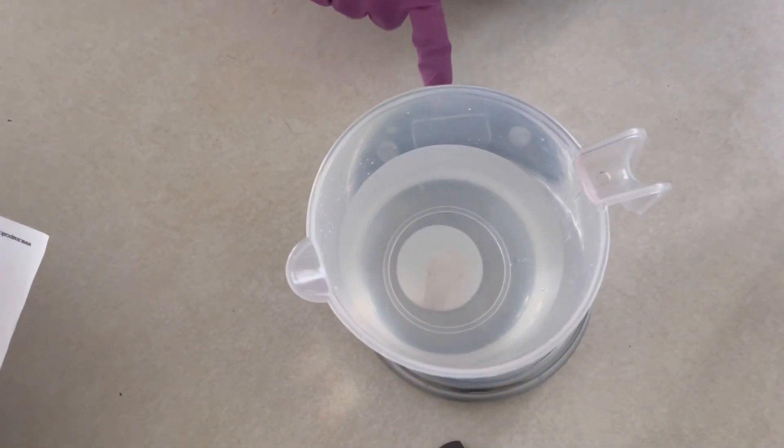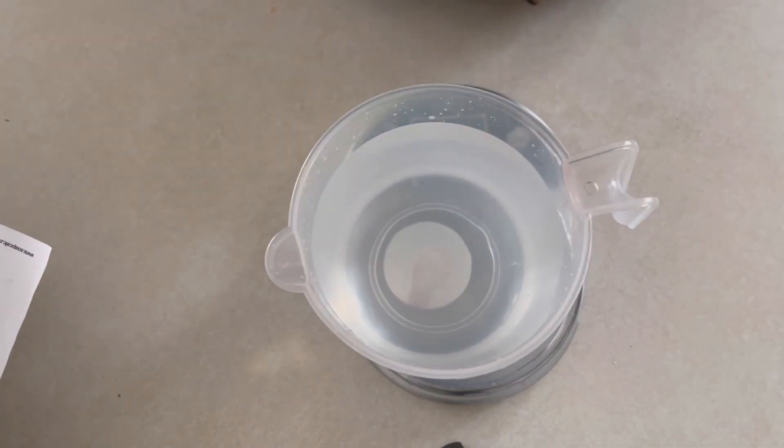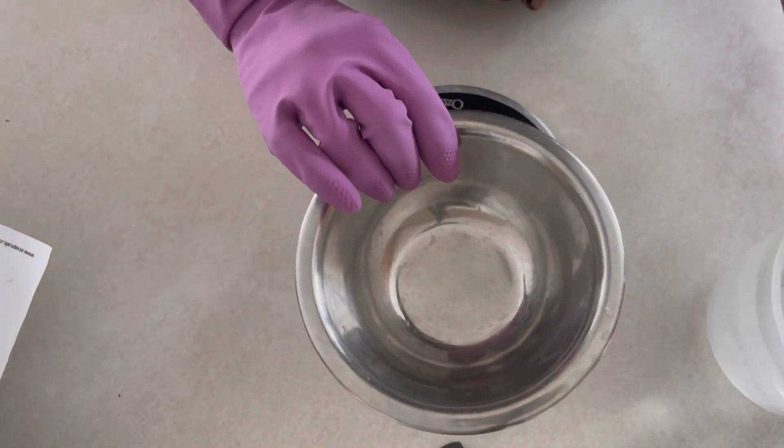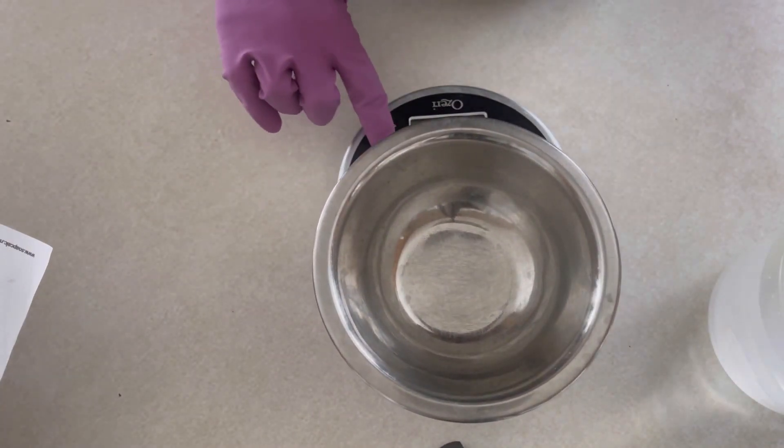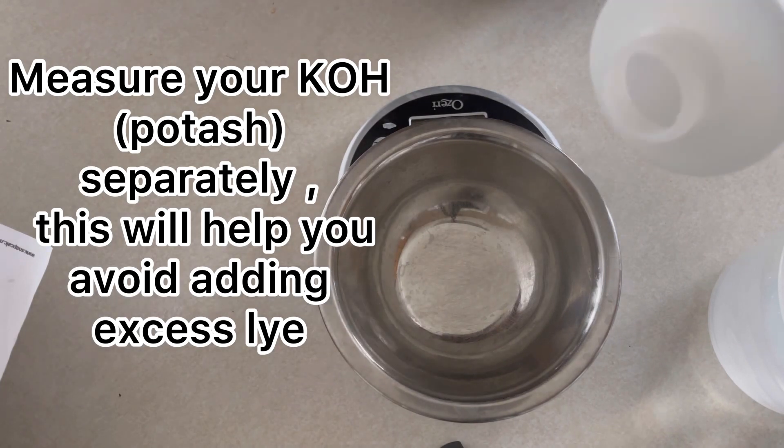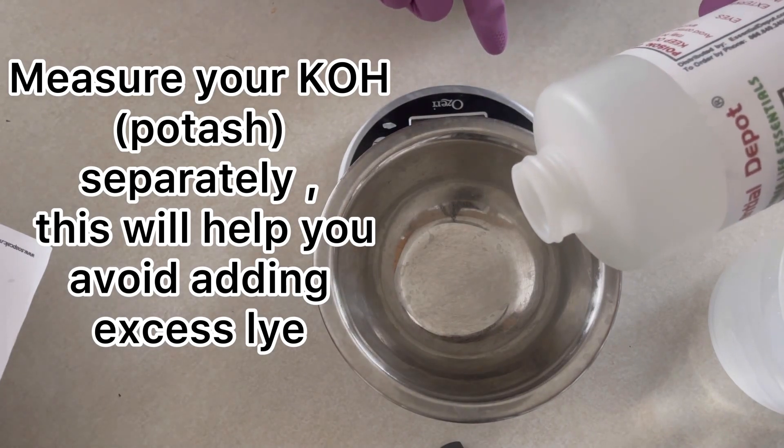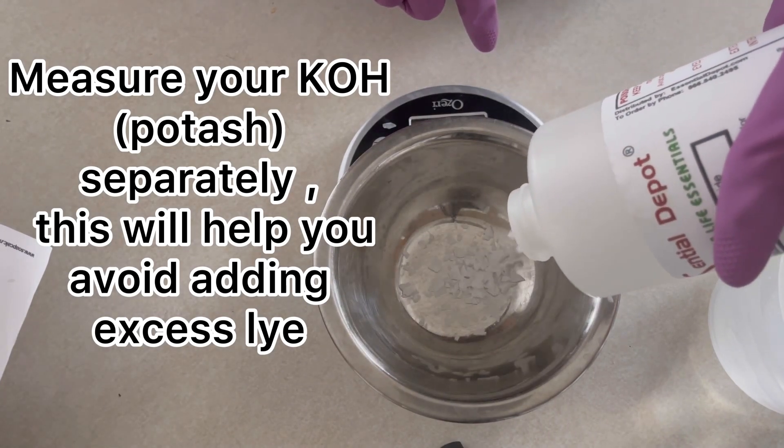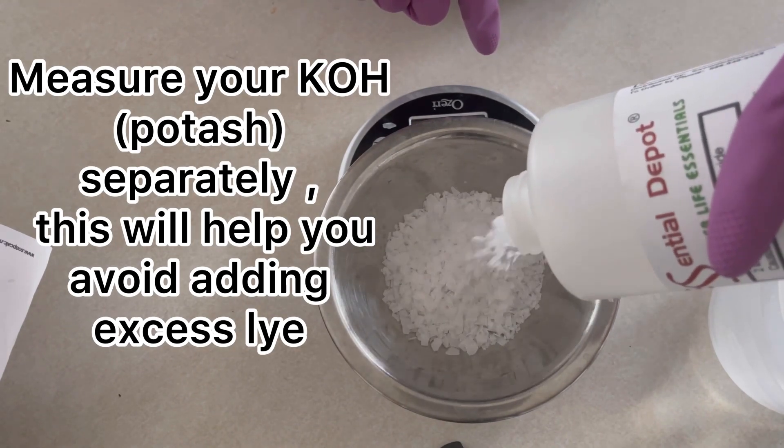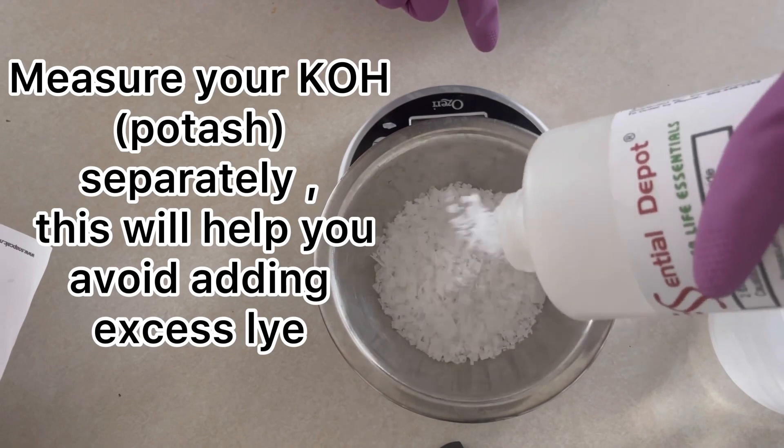Even though making liquid soap is different than making bar soap, it is still vitally important that you use the correct amount of lye in your recipe. There are so many lye calculators which makes it easy and allows you to select liquid soap as an option and calculate the amount of KOH you need in your recipe.